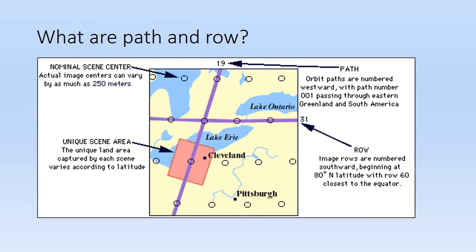Path and row give you the information you specifically need for a particular site. For example, this is Cleveland — the path is 19 and the row is 31. You need to find that information out when you're selecting your Landsat images to download, so it's good to know which specific paths and rows you're going to be looking for within your individual area.